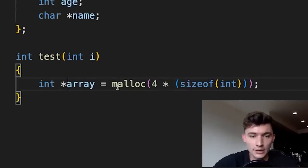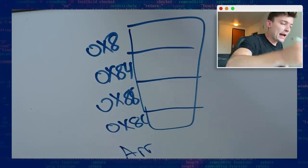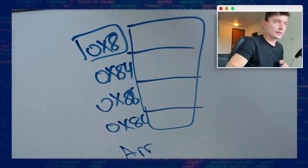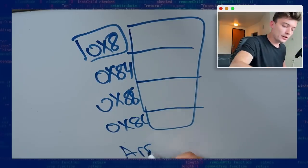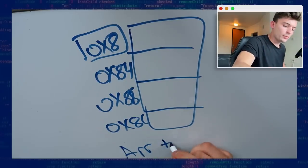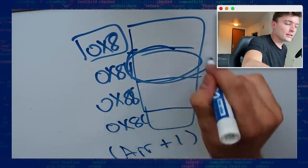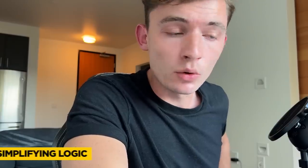However, what malloc is actually going to return to us is actually just this address. So if we wanted to access the second element of the array, we could literally just take the array and plus 1. That would give us this address.